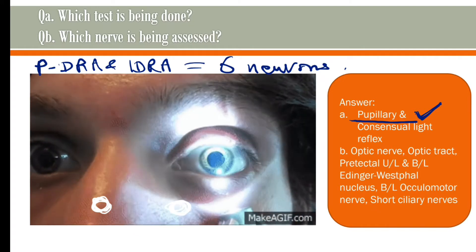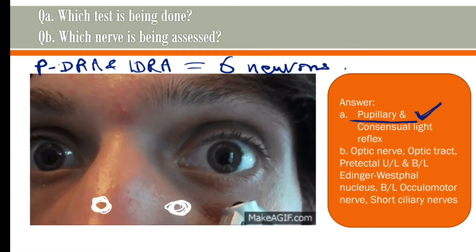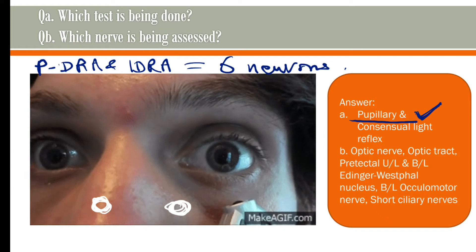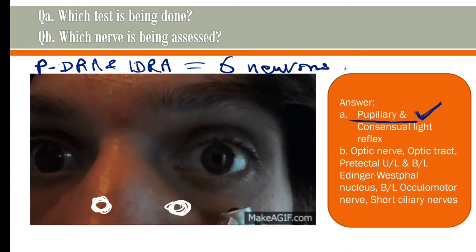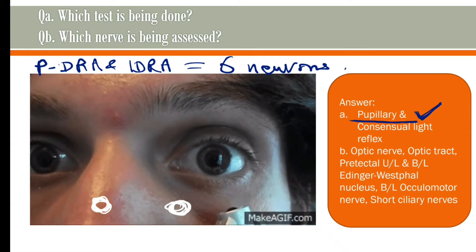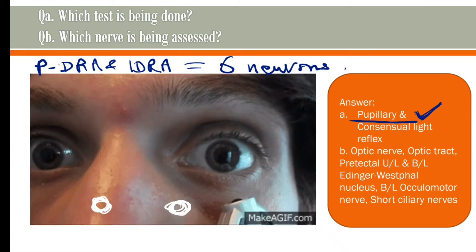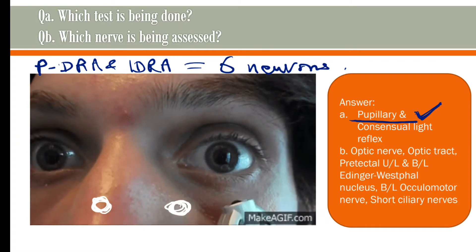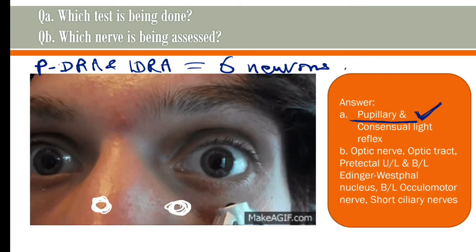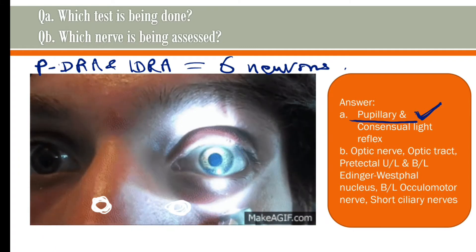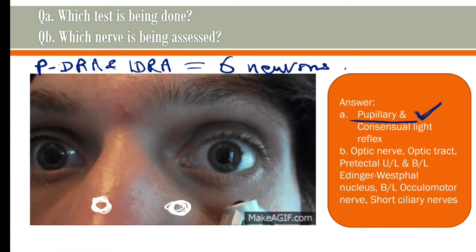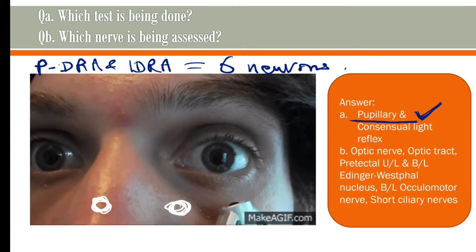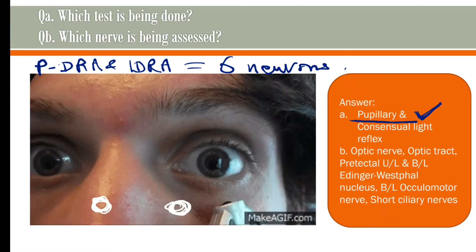90% of fibers in the optic tract relay in the LGB, forming the geniculate pathway of the visual system. But 10% of fibers from the optic tract bypass the LGB and reach directly to the midbrain at the level of the superior colliculus. These 10% fibers, which do not relay in the LGB, form the non-geniculate pathway of the visual system.